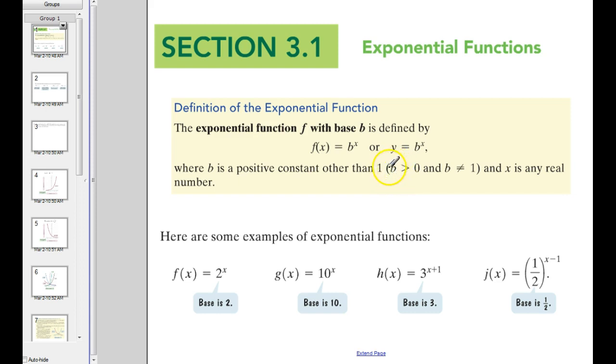If b were allowed to be, for instance, negative 2, the domain of these things are all real numbers for x. It can be anything. So say for instance x were a half and b were negative 2. Well, that would be the square root of negative 2, which would be an imaginary number. So since x can be any real number, b has to be a positive base for us to have a continuous function or real output everywhere.